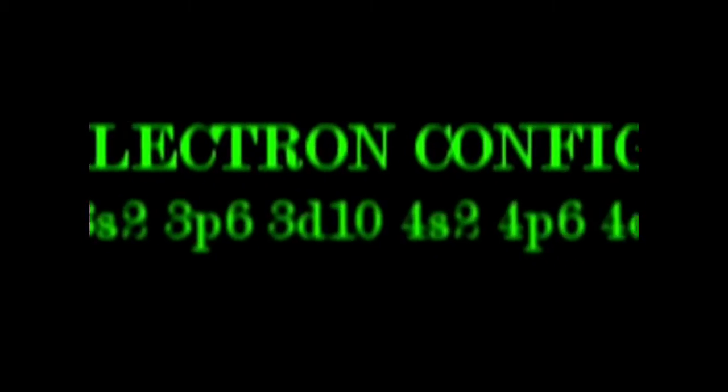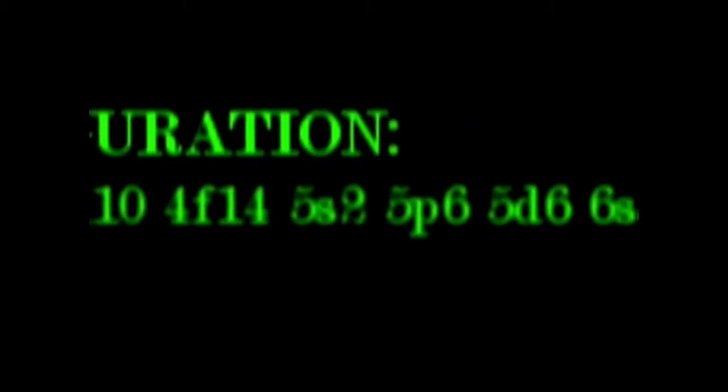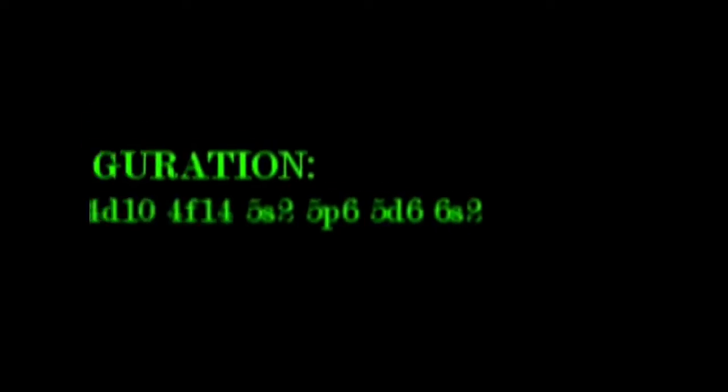The electron configuration of Osmium is 1s2, 2s2, 2p6, 3s2, 3p6, 3d10, 4s2, 4p6, 4d10, 4f14, 5s2, 5p6, 5d6, 6s2.